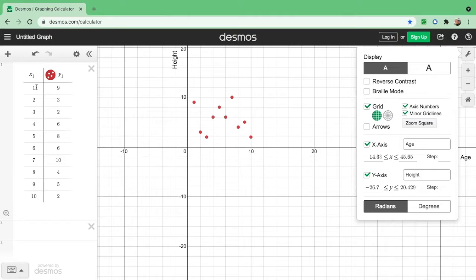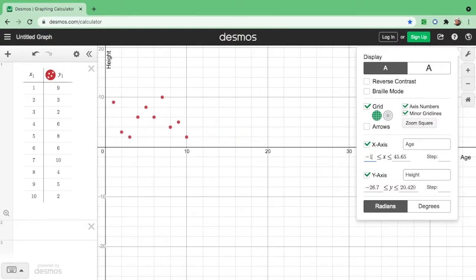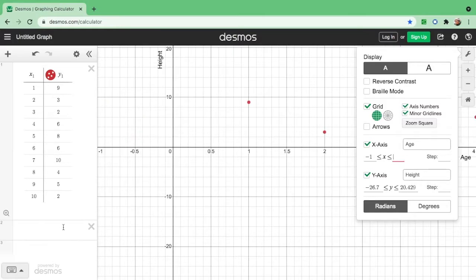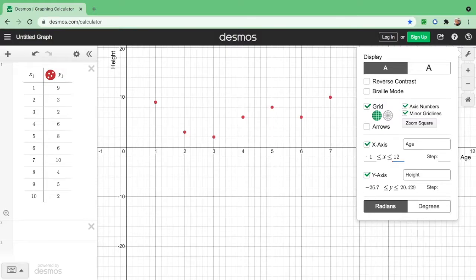So you know that your x starts with 1 and ends at 10. So if you want, you can just type from negative 1 and ends the number. Since it's 10, you can actually do 12.